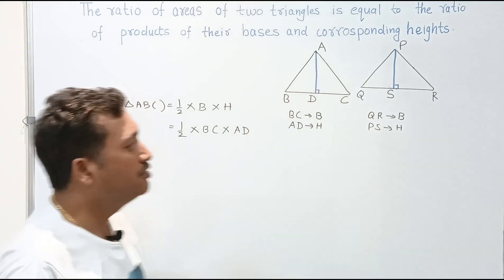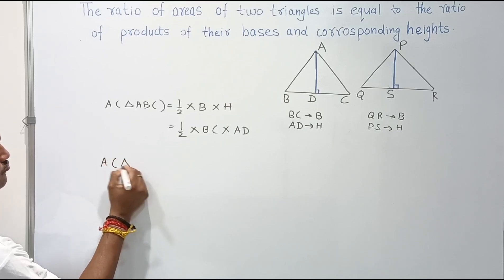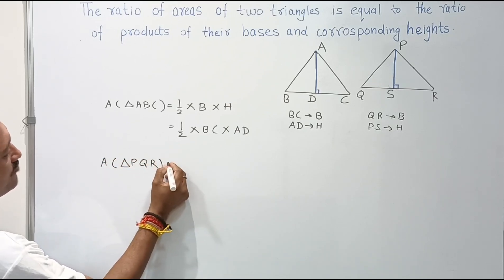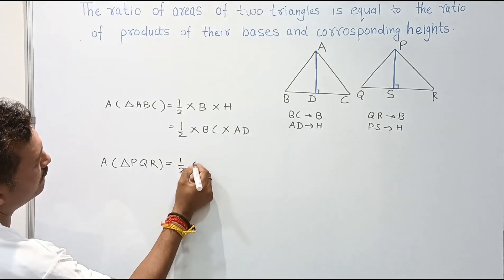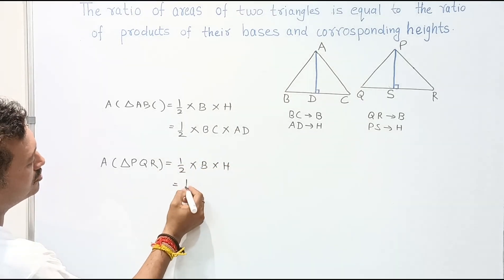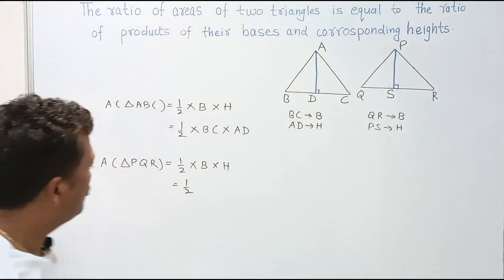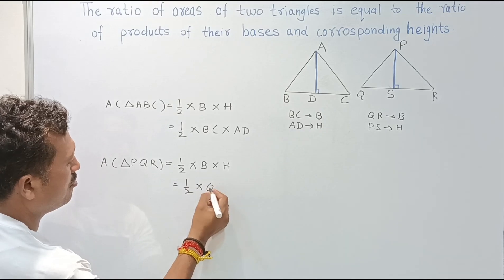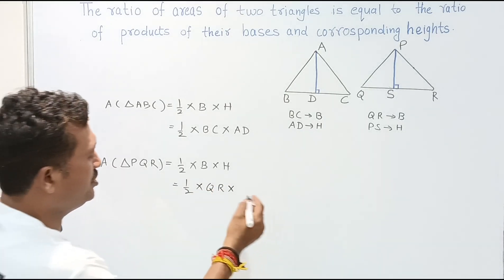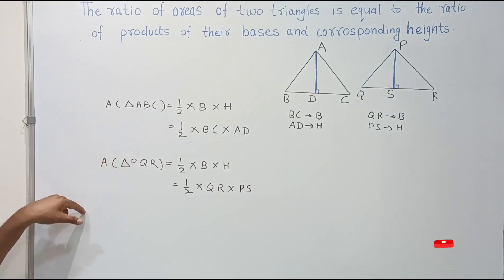Similarly, area of triangle PQR equals half into base into height. For triangle PQR, the base is QR and the height is PS, so area of triangle PQR equals half into QR into PS. Now we have the areas of both triangles.